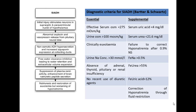Essential criteria for diagnosing SIADH: effective serum osmolality less than 275, urine osmolality more than 100, clinically euvolemic, urine sodium more than 30, and absence of adrenal, thyroid, or renal insufficiency, with no recent diuretic use. If diuretics are used, calculate fractional excretion of uric acid — less than 12% favors diuretic use. Supplemental criteria apply if essential criteria are absent. In summary, SIADH is a diagnosis of exclusion: rule out all other causes of hyponatremia first.